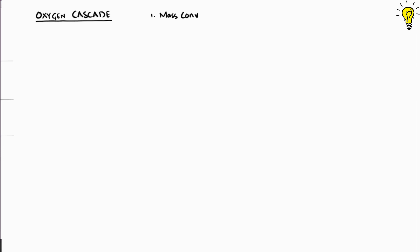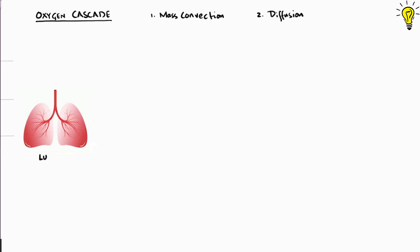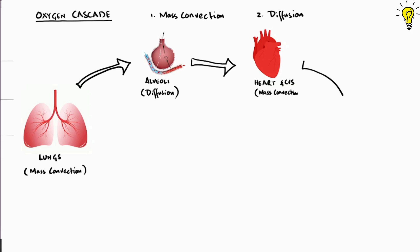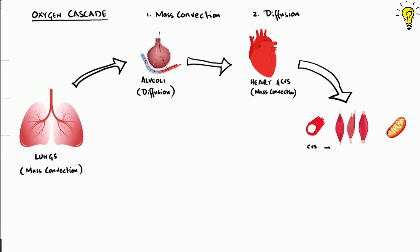Essentially, the Oxygen cascade has two key processes that help transport Oxygen from air to mitochondria: one, mass convection, and two, diffusion. The lungs, with robust ventilation, are part of mass convection driving Oxygen in. But at the alveolar level, it is diffusion that matters a lot. Further on, mass convection through powerful cardiac output and pumping of the heart drives Oxygen throughout the body. But at the tissue level, Oxygen moves from arteries to tissues to mitochondria through diffusion.